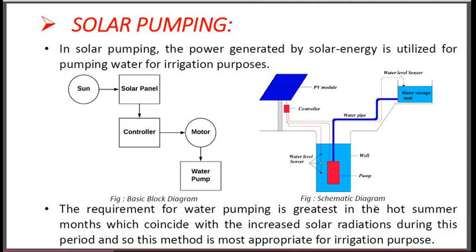The requirement for water pumping is greatest in the hot summer months, which coincide with increased solar radiations during this period, making this method most appropriate for irrigation purposes. In summer, the requirement of water is increased and solar radiations are at maximum efficiency, so we can utilize it for irrigation. During periods of inclement weather when solar radiations are low, the requirements for water pumping are also low, and transpiration losses from crops are also low.